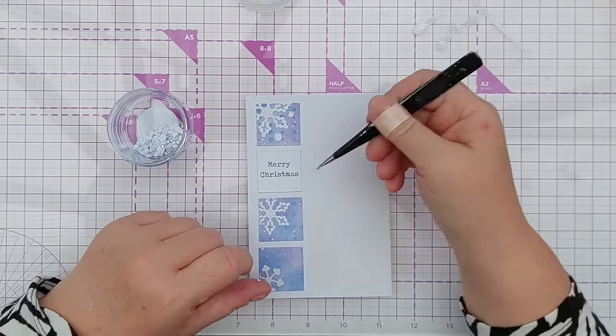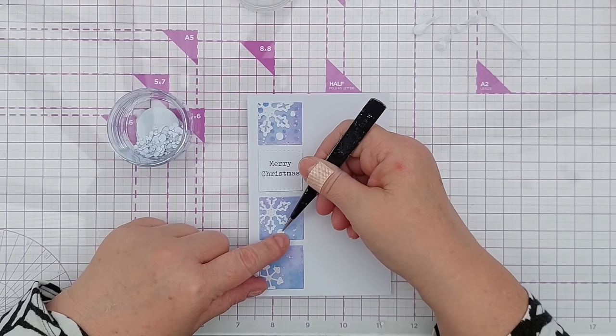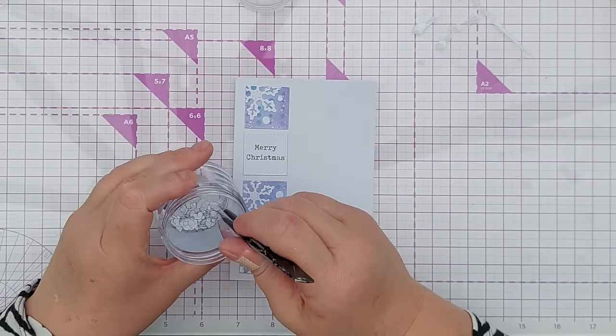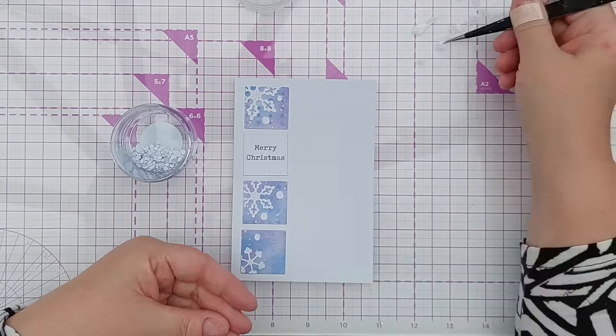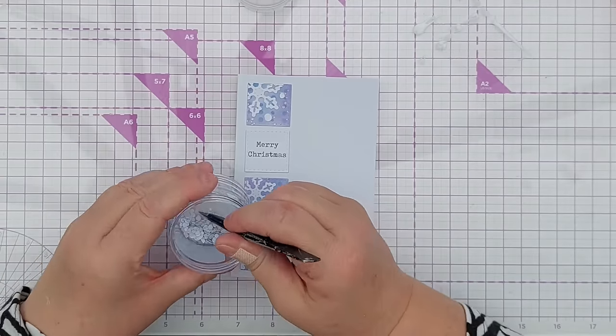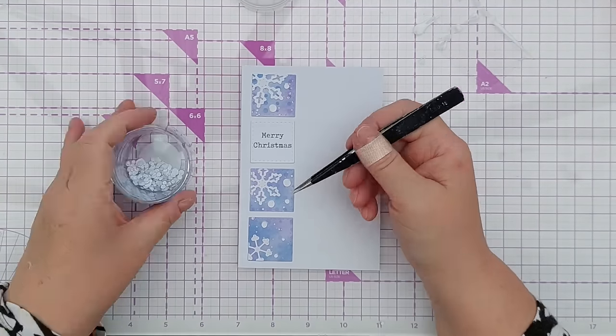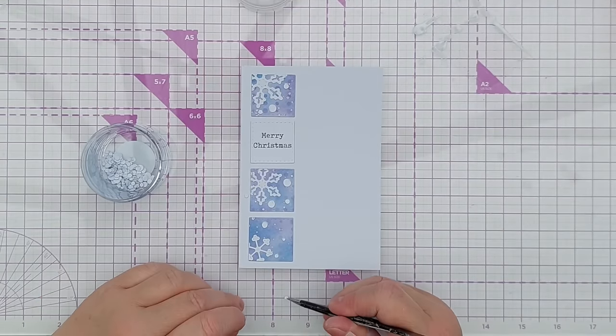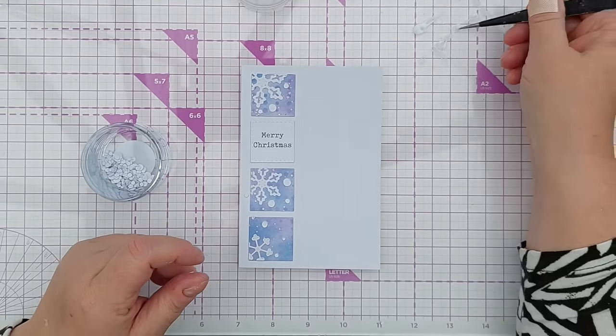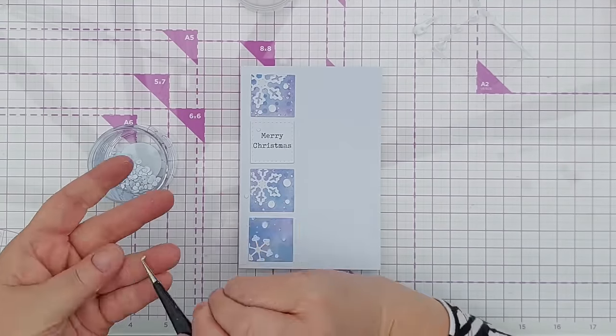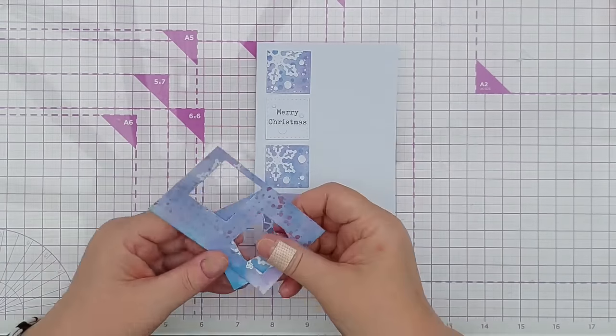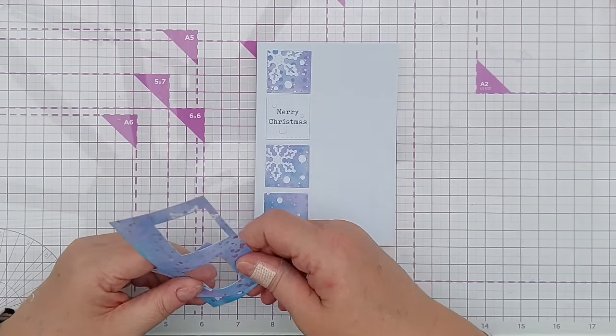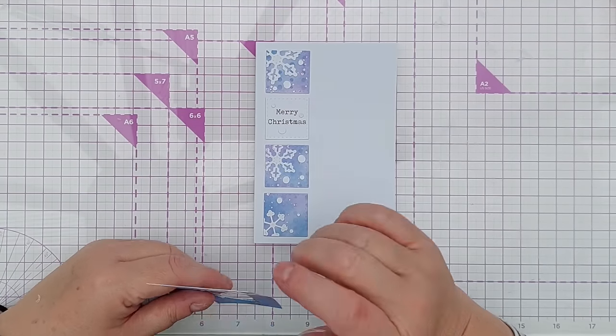So you can add a few to each square. Could even add some around the sentiment as well. I think I will add some around the sentiment just to bring in a bit of texture there. Could even cut some little circles from the leftover bits of this to bring a bit of purple around the sentiment, but that's for another card.